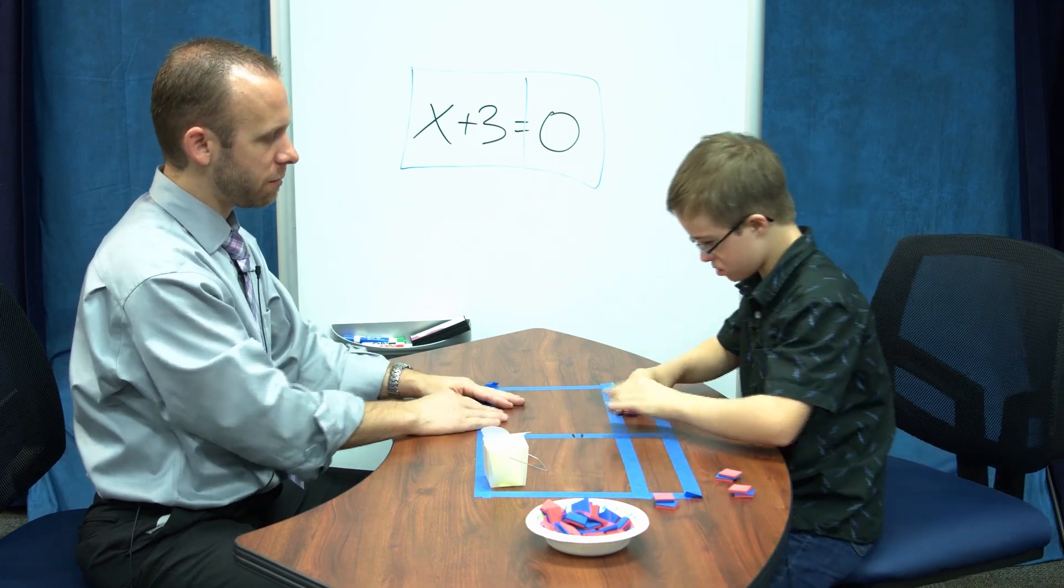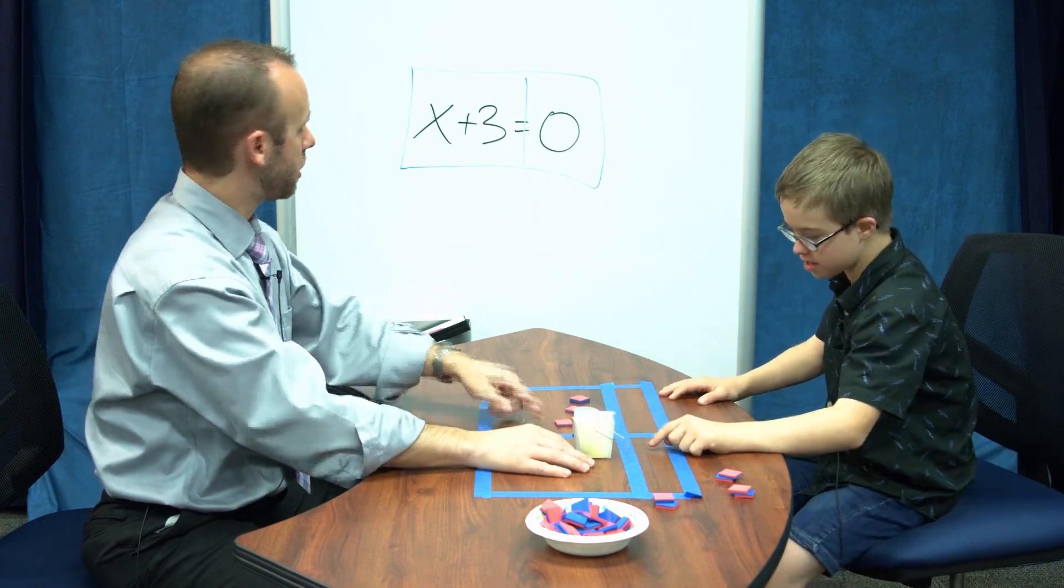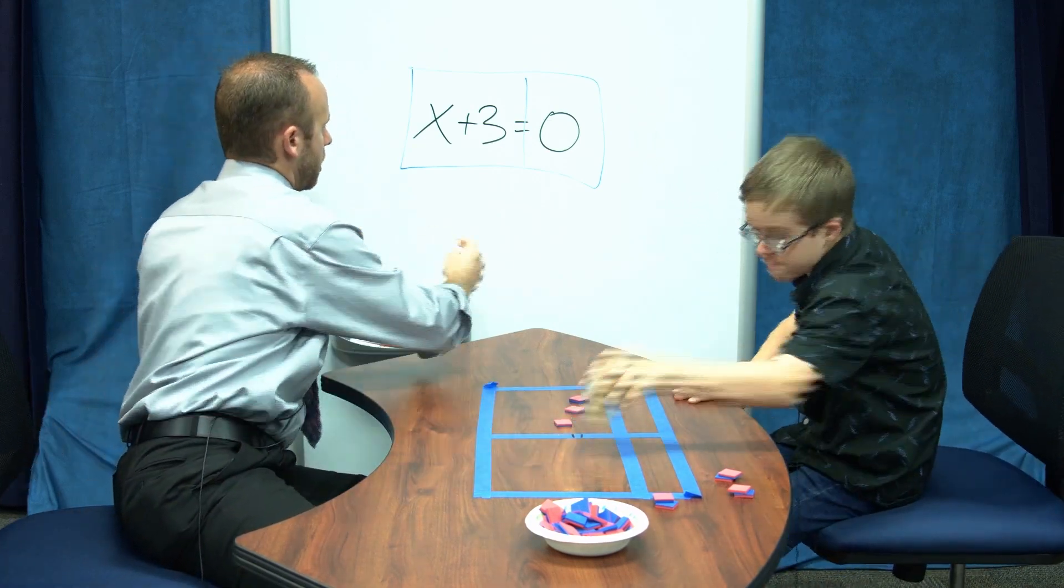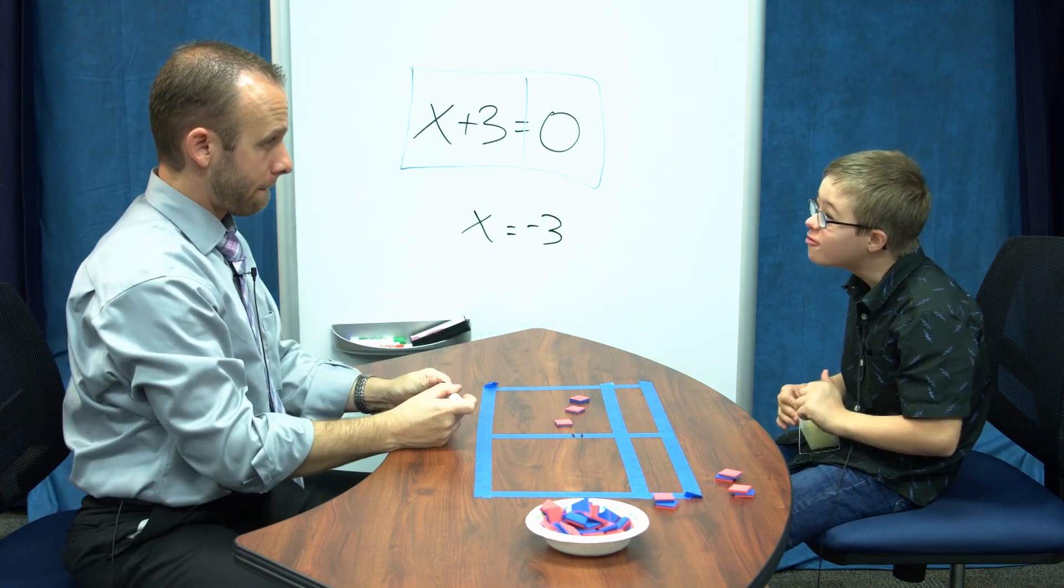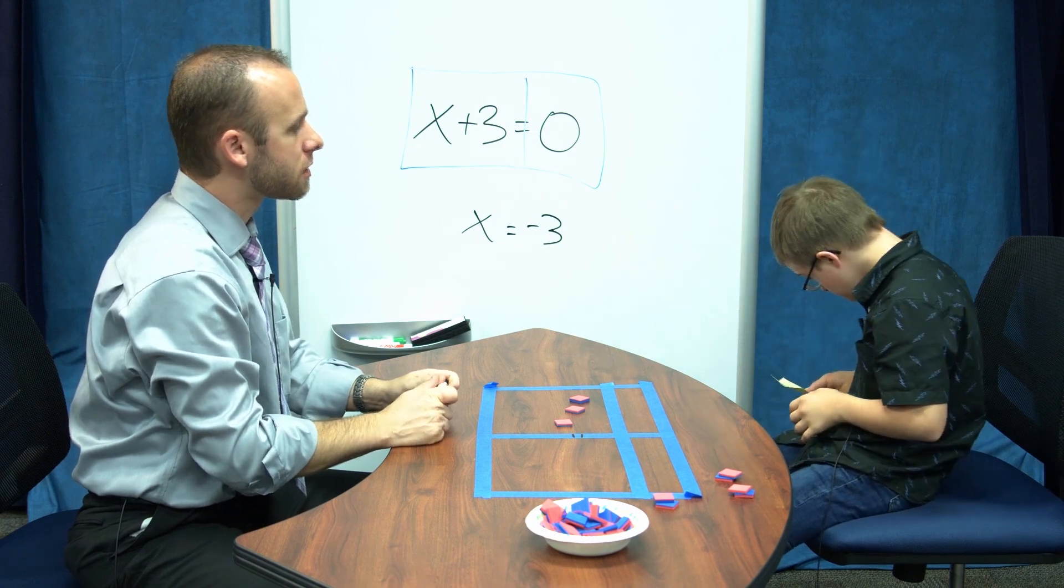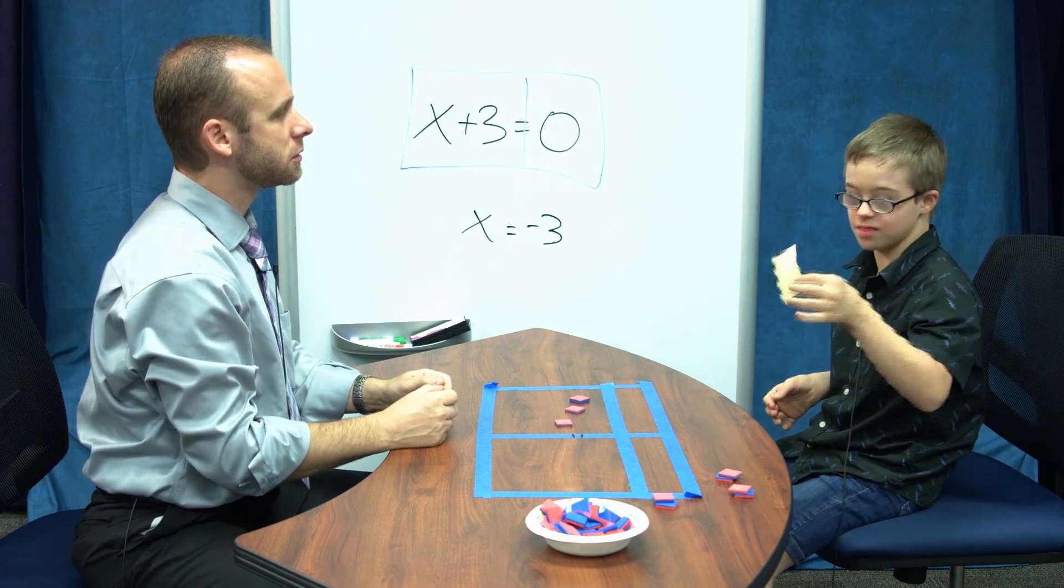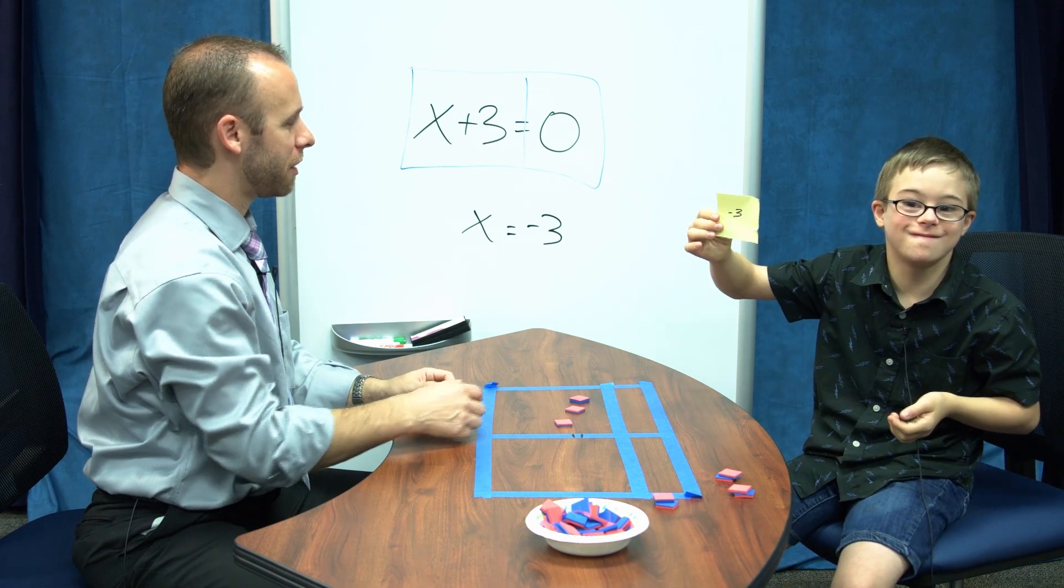Good job. Negative three on both sides. What happens here when we simplify? What happens here when we simplify? What's x? Wait, negative three. What's x equal to? Negative three. Let's see. What's in there? Negative three. Yeah, buddy. Nice job.